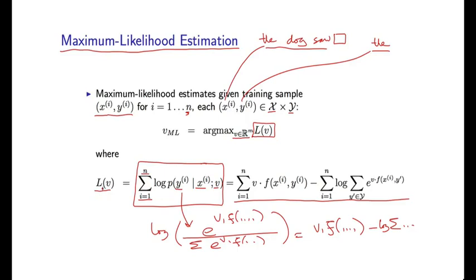And so the big remaining question is, how do we actually optimize L of v? How do we find these maximum likelihood estimates?